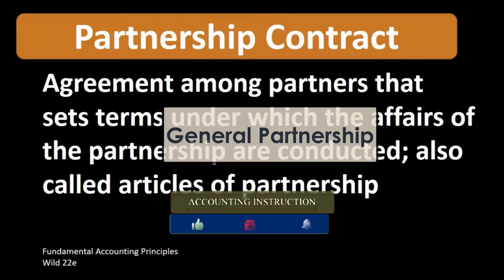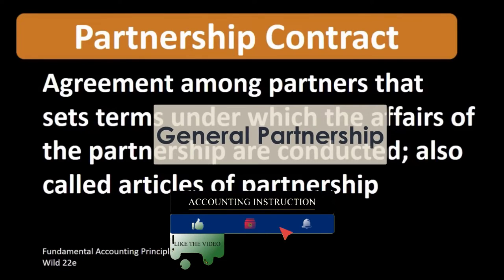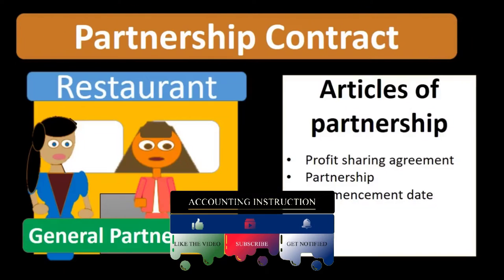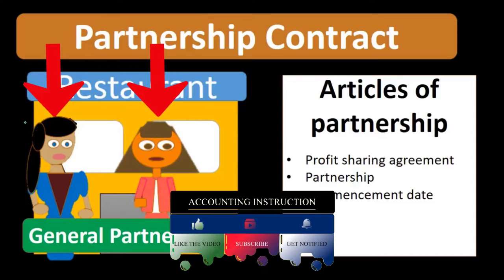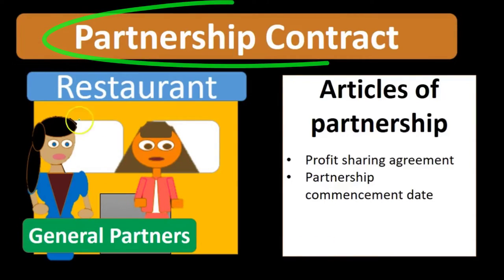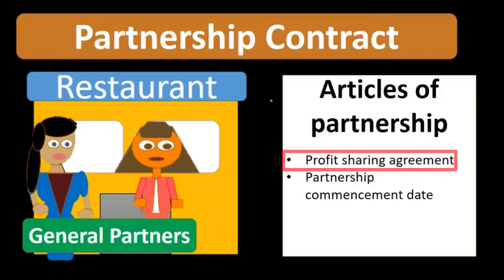In a general partnership, it's important to lay out the terms of that partnership. This can be done with a partnership contract. For example, if two or more individuals start a restaurant together in the form of a general partnership, they would want to have a partnership contract or articles of partnership that lays out at a minimum the profit sharing agreement, when the partnership is going to start, and other relevant terms.